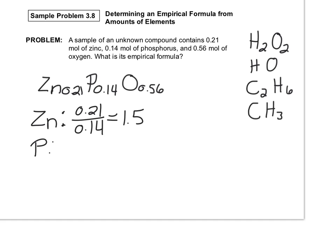For phosphorus: 0.14 divided by 0.14 equals 1. For oxygen: 0.56 divided by 0.14 equals 4.